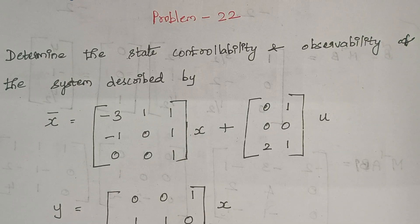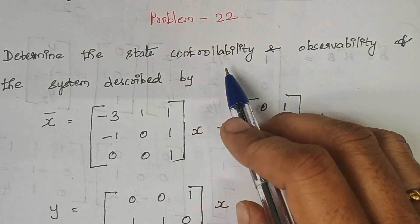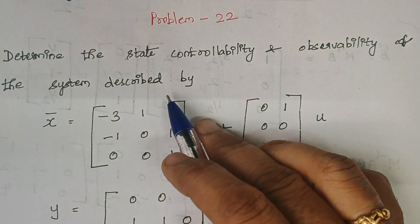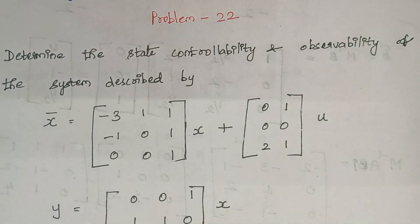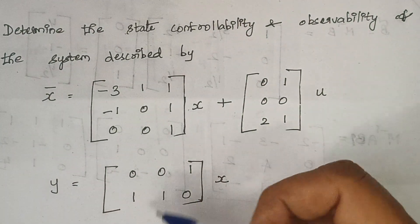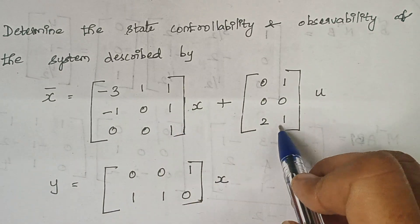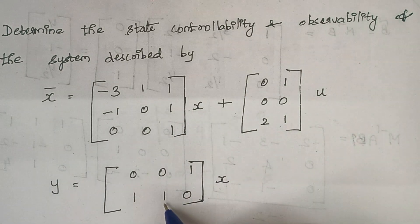Hello viewers, I am Kausalya. Today we are going to discuss about the problem: determine the state controllability and observability of the system described by the following equations. Here, as we all know, this is our A matrix, this is our B matrix, and this is our C matrix.